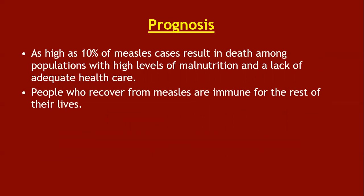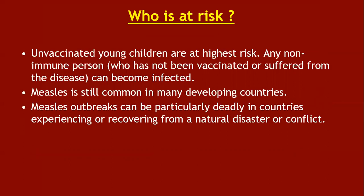As high as 10 percent of measles cases result in death among populations with high levels of malnutrition and lack of adequate health care. People who recover from measles are immune for the rest of their lives. Unvaccinated young children are at highest risk, as is any non-immune person who has not been vaccinated. Measles is still common in many developing countries and can be particularly deadly in countries experiencing or recovering from natural disasters or conflicts.